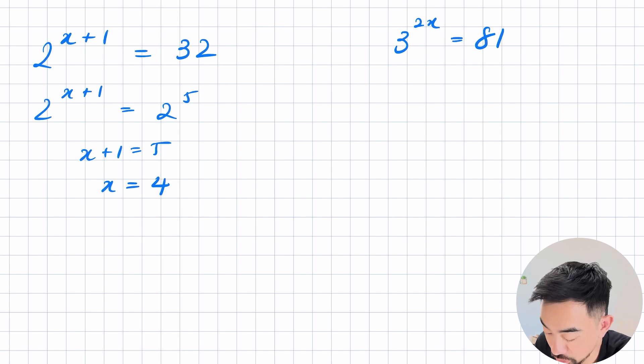All right what about this example here? So I've got 3 to the power of 2x is equal to 81. So once again I want to try and make that 81 into a power of 3, mainly because I know that 81 is a power of 3. So 3 to the power of 4 I believe is 81. Now that the base is the same you can equate the powers. So 2x equals 4, x equal to 2.